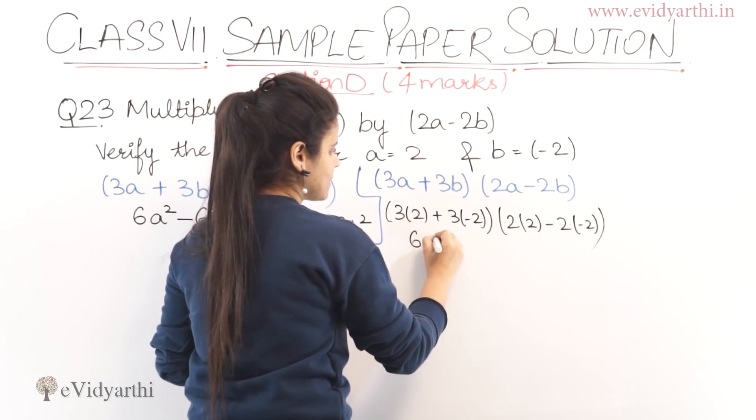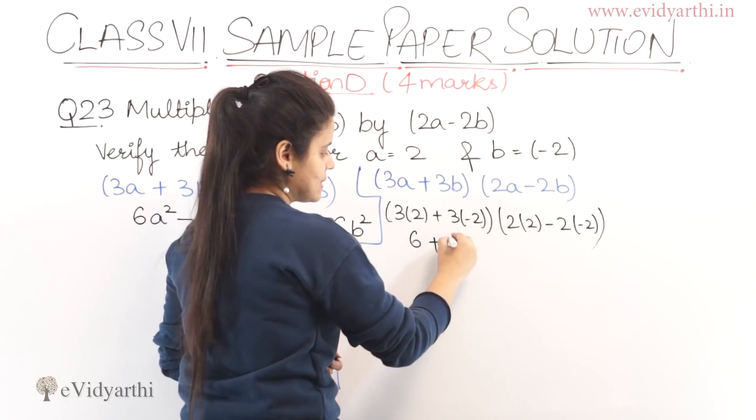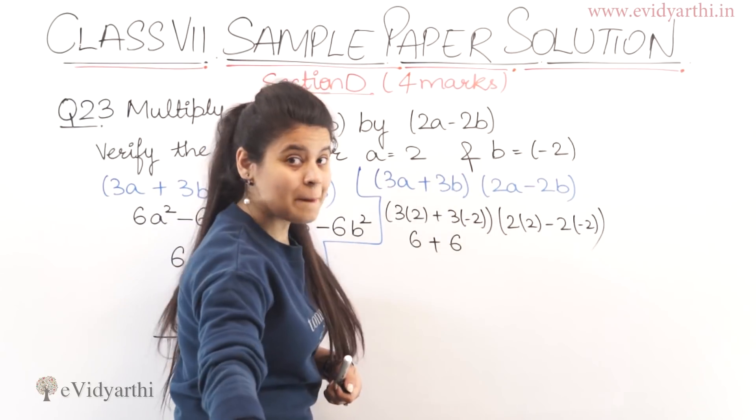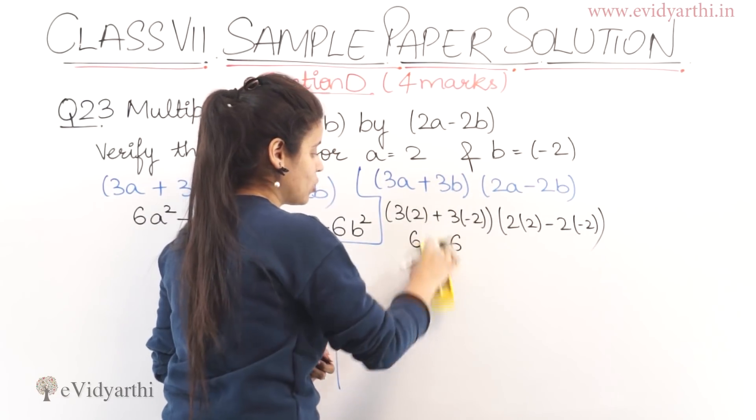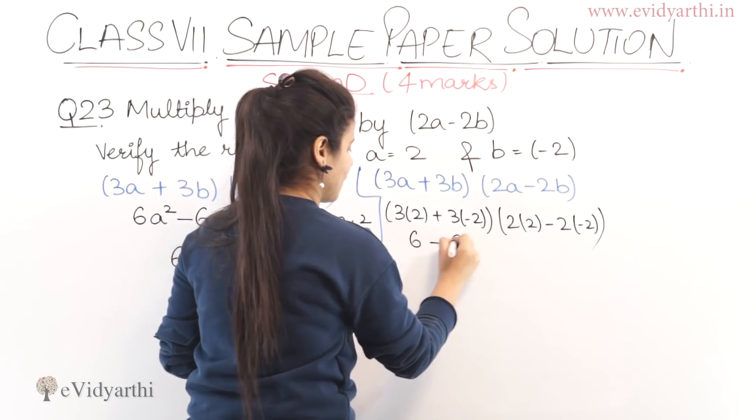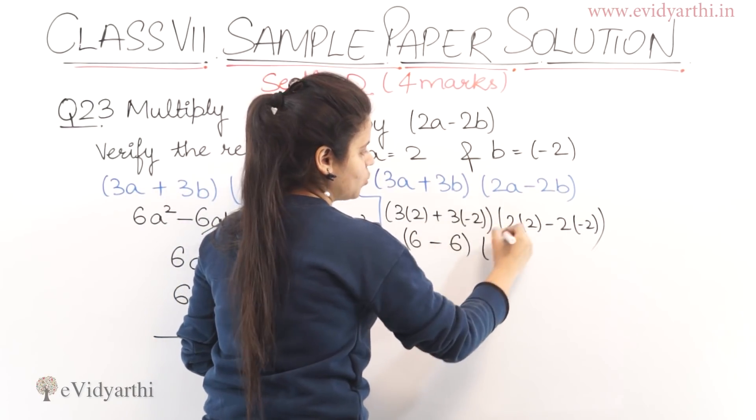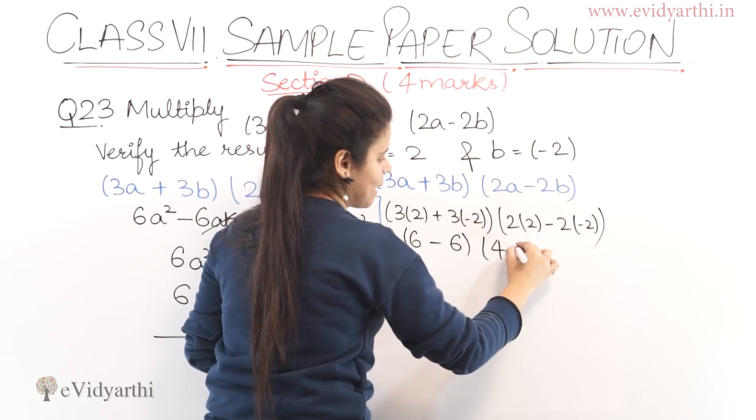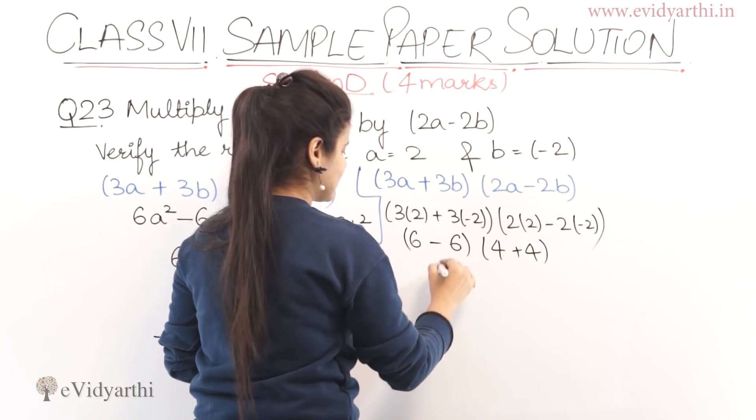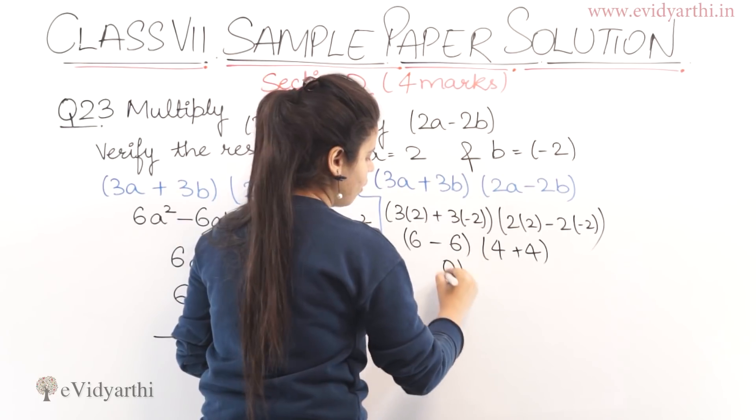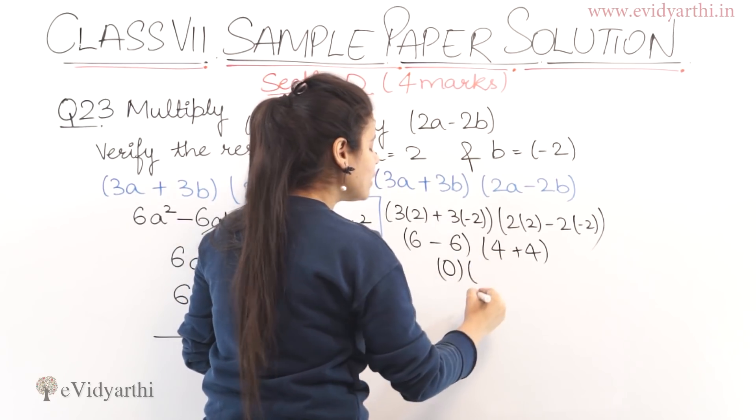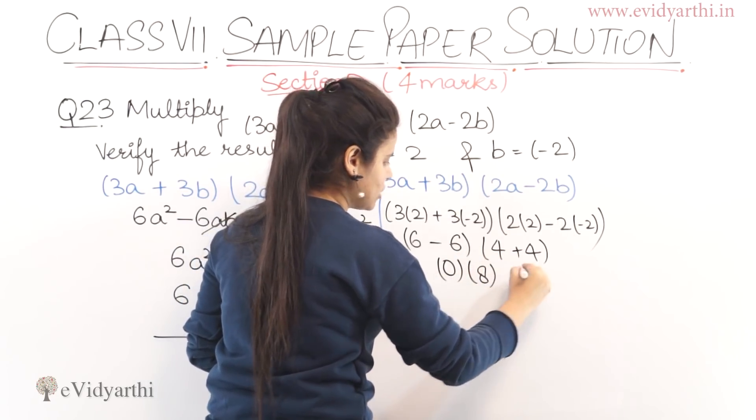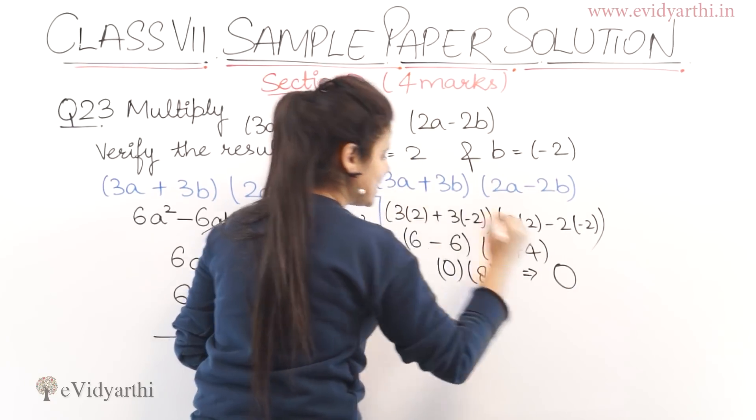So 3 times 2 is 6 plus 3 times minus 2 is minus 6. Plus minus is minus, so what sign comes between them? Minus. Then 2 times 2 is 4, and minus minus is plus, so we get 6 minus 6 which is zero. Multiply by 4 plus 4 which is 8. Zero into 8 is zero.